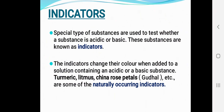Next we have indicators. Indicators are special types of substances used to test whether a substance is acidic or basic. The indicators change their color when added to a solution containing an acidic or a basic substance. For example, turmeric, litmus, and china rose petals are some of the naturally occurring indicators.